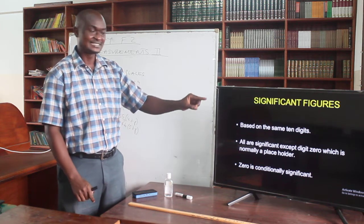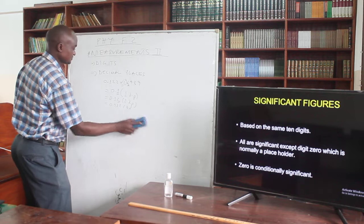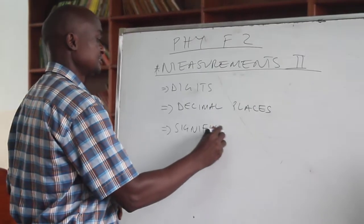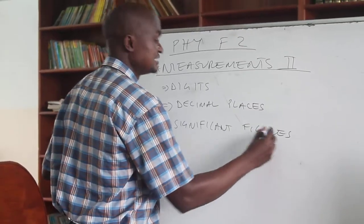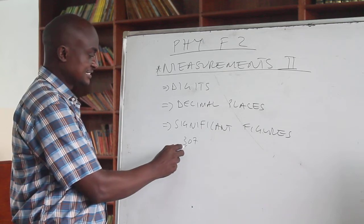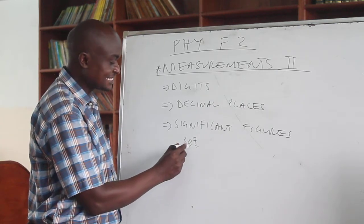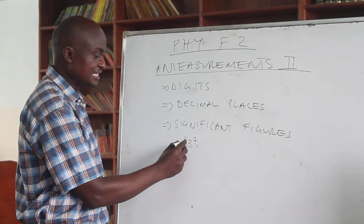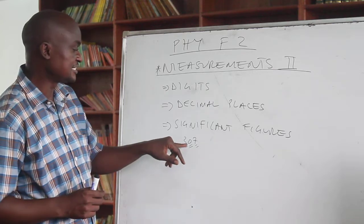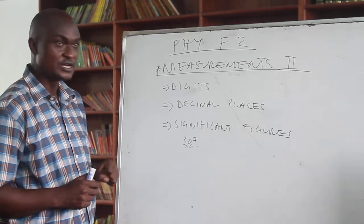Let's look at examples of how we write numbers in significant figures. Take the number 307. The three is significant, the seven is significant, but zero will not be significant. However, in this case the zero becomes significant because of one condition: zero is written between two digits which are not zero. So zero becomes significant under two conditions — the first condition is if the zero is written between two non-zero digits.